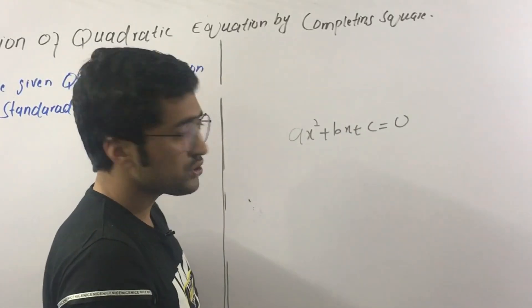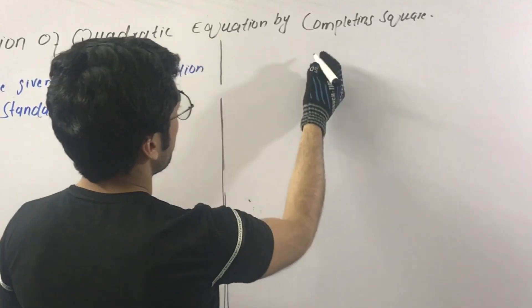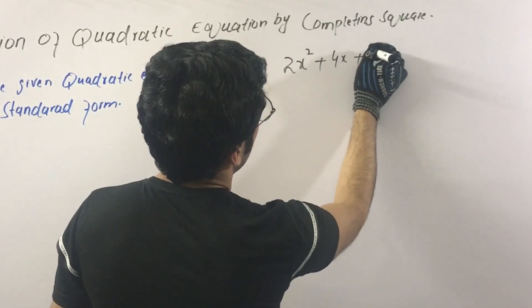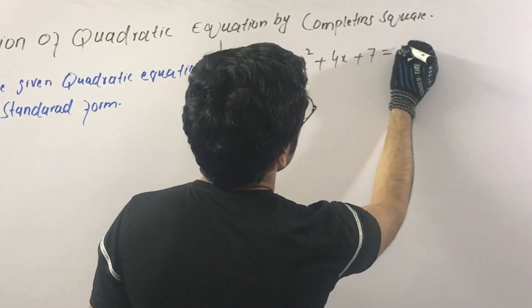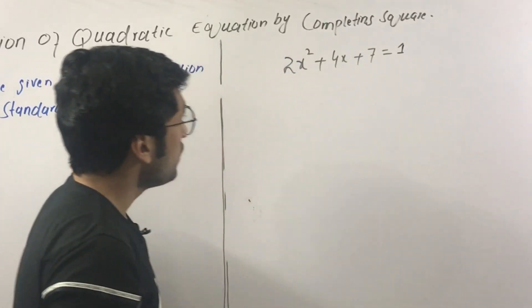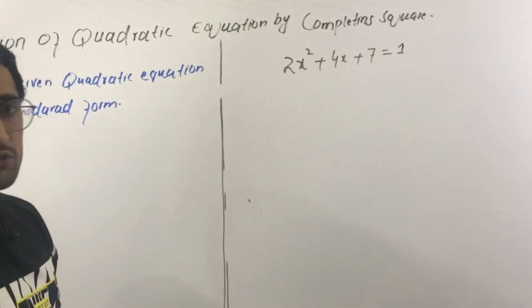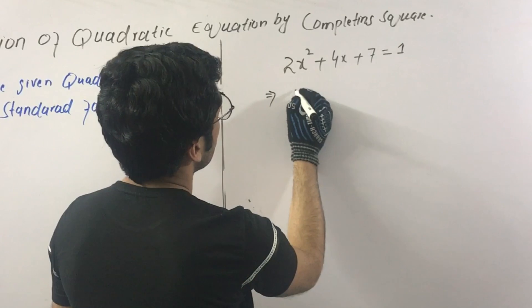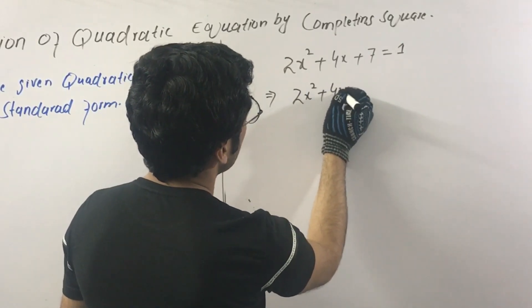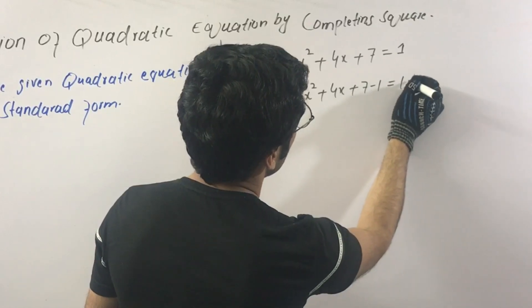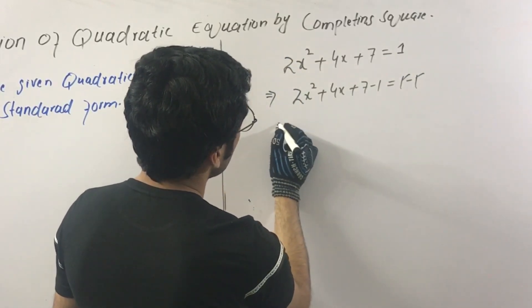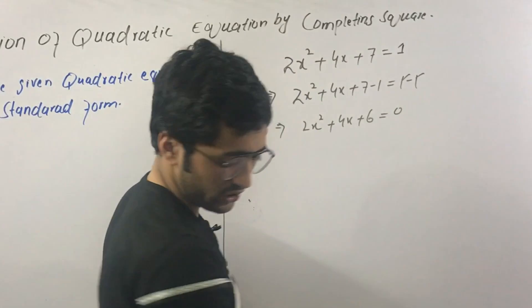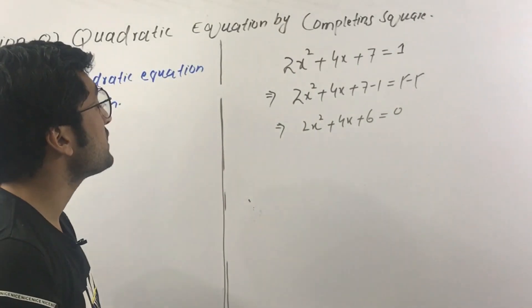For example: 2x squared plus 4x plus 7 equals 1. We need to convert this to standard form, meaning the right side must equal zero. So we subtract 1 from both sides: 2x squared plus 4x plus 7 minus 1 equals 1 minus 1, giving us 2x squared plus 4x plus 6 equal to zero.